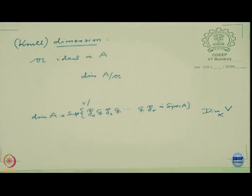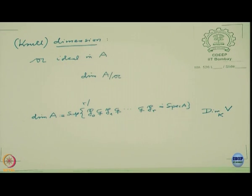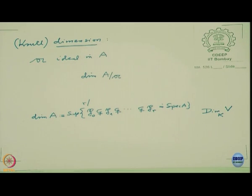There are several questions: the supremum may or may not exist, and from this definition it is not clear how to compute the dimension. In the first few lectures I am going to specialize the rings and find another characterization of dimension that enables us to compute it. First I will treat rings that are polynomial rings over a field, or finite type algebras over a field. Then local rings. Then the general dimension theorem for Noetherian rings.